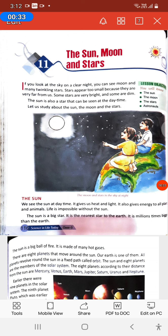The sun is also a star that can be seen at the daytime. Let us study about the sun, the moon and the stars. Lesson objectives: You will know the sun, the moon, the stars, and astronauts.